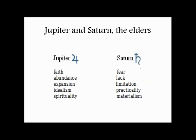Jupiter and Saturn are opposite each other in their attributes — they are a type of polarity. You can see that their symbols are actually inversions of each other: Jupiter is a crescent over a cross, and Saturn is a cross over a crescent. The crescent represents our sentience rising above the limitations of matter represented by the cross. Whereas Saturn — which represents limitation and restriction — is the cross of matter over the crescent of the soul or the feelings.